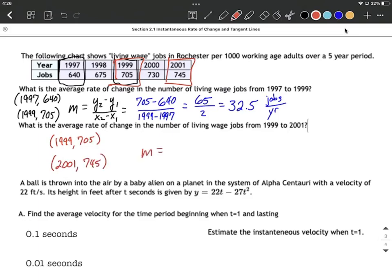For average rate of change, filling into that slope formula, I'm going to go 745 minus 705 over 2001 minus 1999. This works out to be 40 divided by 2, which equals 20 jobs per year.